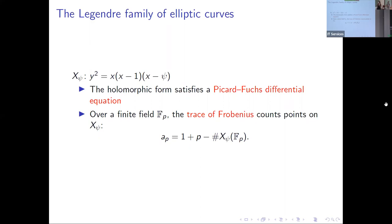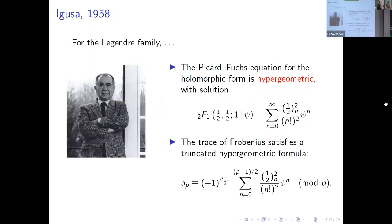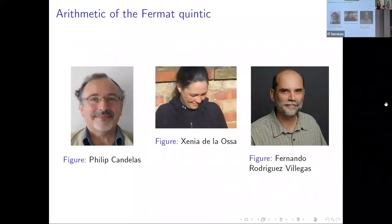So a_p is what we call the trace of Frobenius, and it's related to the point count. Why are we mentioning the Picard-Fuchs differential equation and the number of points in the same sentence? Igusa noticed for the Legendre family that the Picard-Fuchs equation for the holomorphic form is hypergeometric with this solution — a nice power series in psi with combinatorial coefficients. The trace of Frobenius satisfies a truncated hypergeometric formula — the exact same hypergeometric function but truncated at (p-1)/2 times this (-1)^((p-1)/2) modulo p.